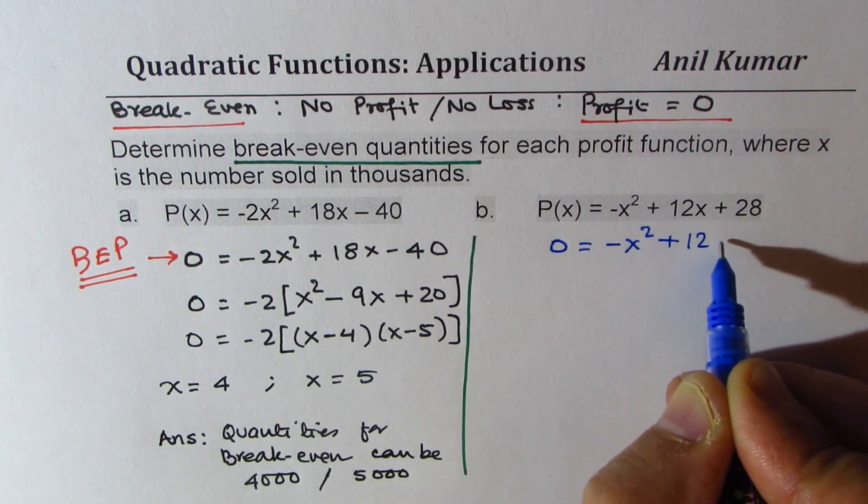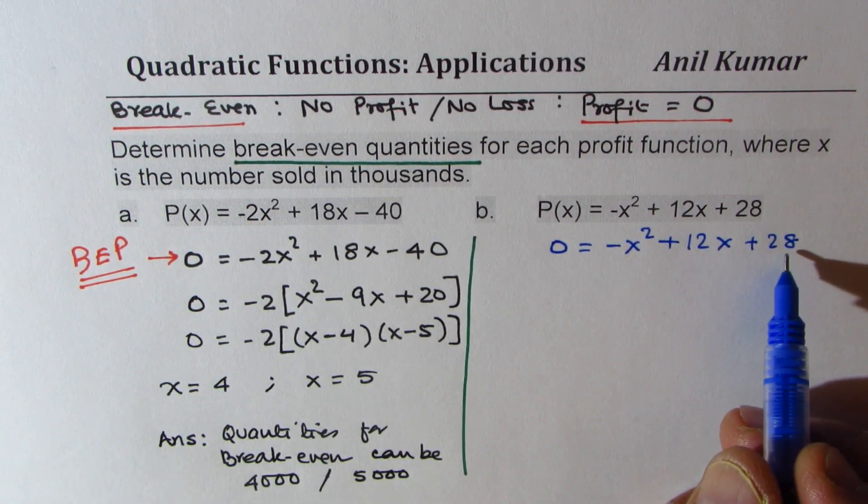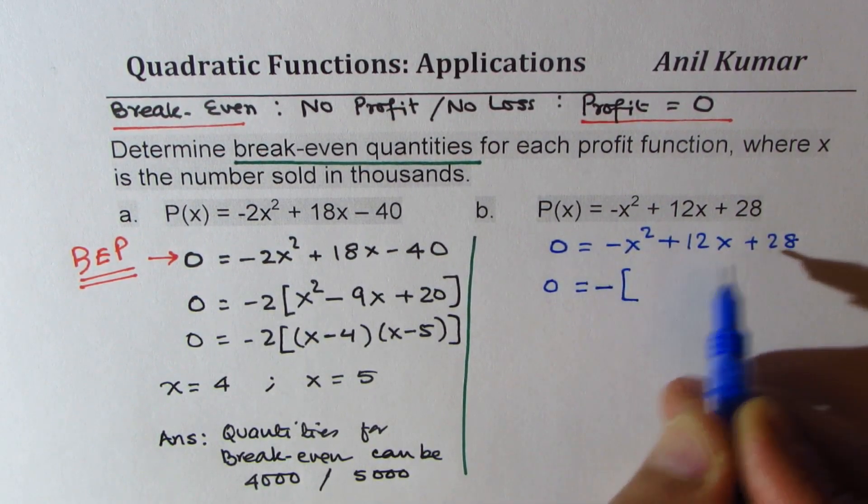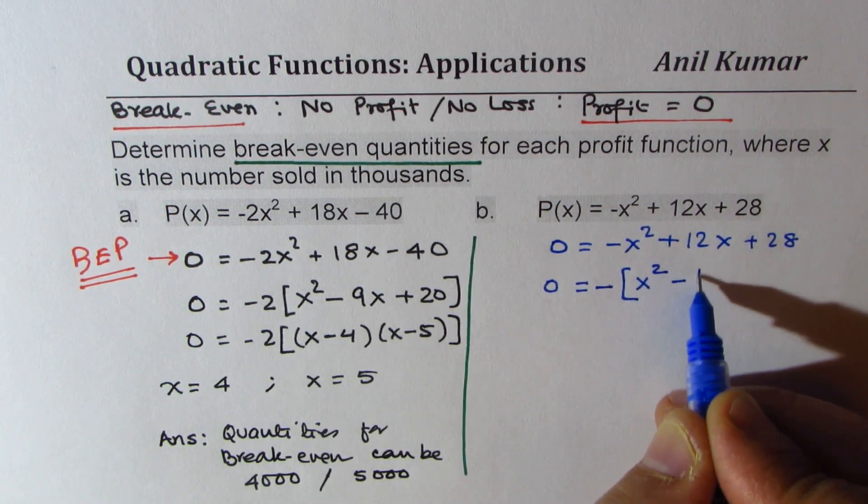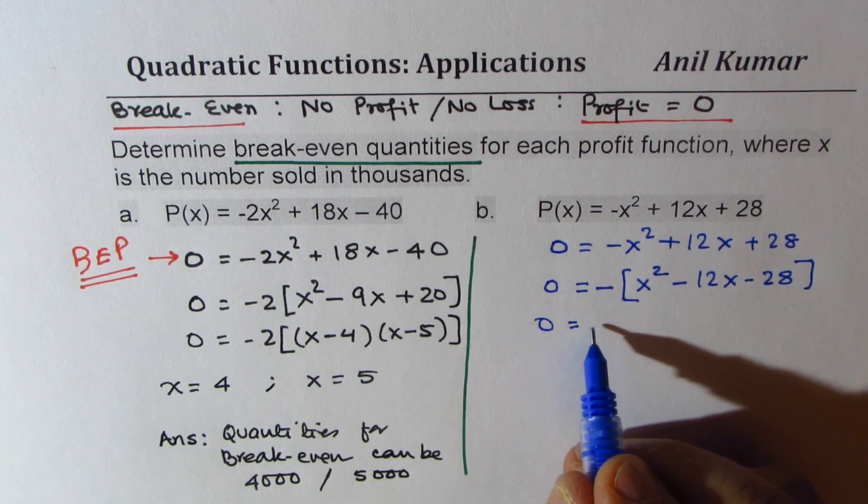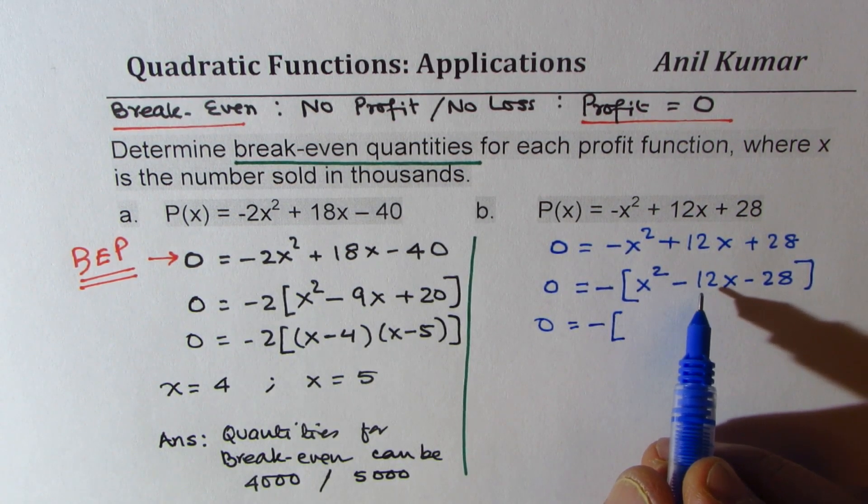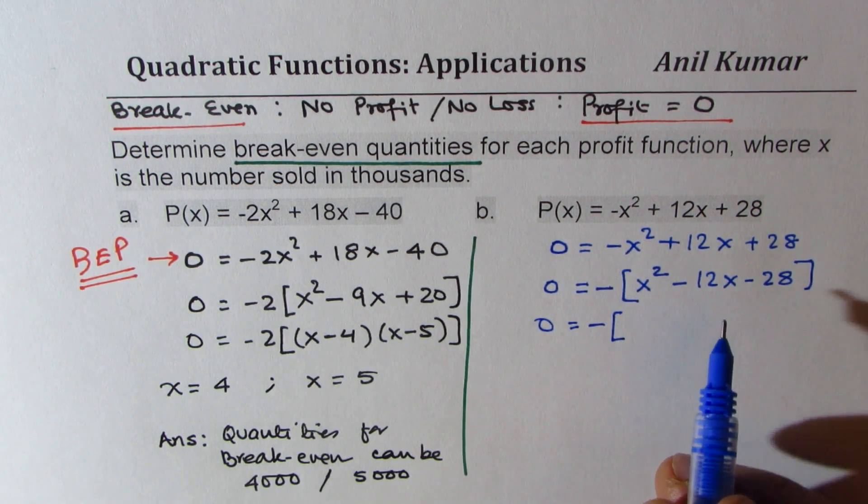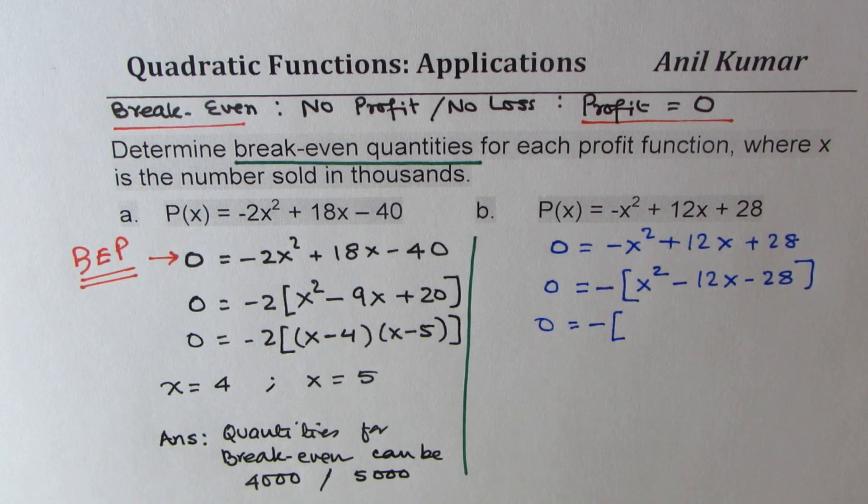At break-even profit is zero, so we'll equate this to zero. We have -x² + 12x + 28. Now 7 times 4 is 28, 14 times 2 is 28. We are looking for minus 28. I prefer to take minus outside and rewrite my equation. I always want this coefficient to be positive, so we'll rewrite this as x² - 12x - 28. I know for some this is an extra step, but it always helps. So 14 and 2 will give us the right numbers here.